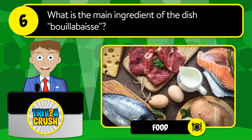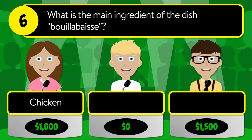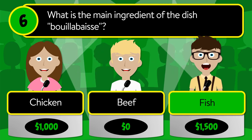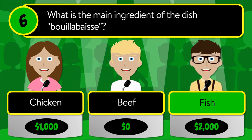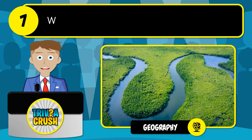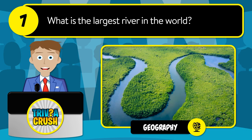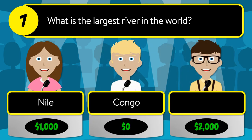Question number six: what is the main ingredient of the dish booyah base? Is it chicken, beef, or fish? The correct answer is fish.